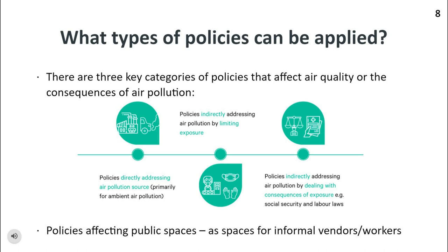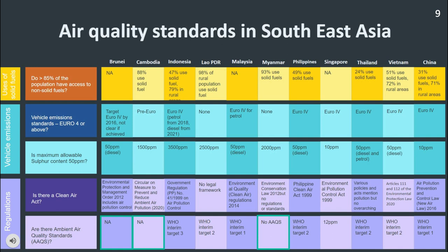Many policies to combat climate change have clean air as a co-benefit of action. These are examples of measures that seek to limit the emissions of various pollutants or to limit exposure of populations. With regards to national ambient air quality standards, three countries do not have any standards in place: Myanmar, Cambodia, and Brunei. No country has set the annual mean PM2.5 standard to the WHO guideline level of 5 micrograms per cubic meter. Singapore is the closest at 12 micrograms per cubic meter, while the remaining countries are variously at WHO interim target 1 to 3.